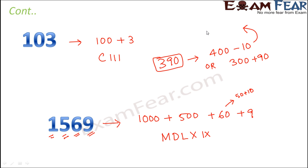Now 400 minus 10: 400 is written as CD because D is 500 and C is 100, so 500 minus 100, that is 400 minus 10. So that means X to be written on the left-hand side. So this is one option. The other option is 300 plus 90. Now how do we write 300?